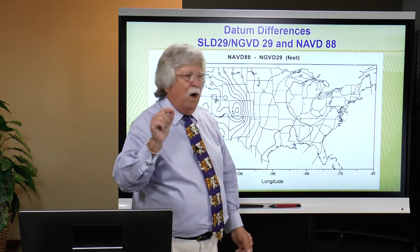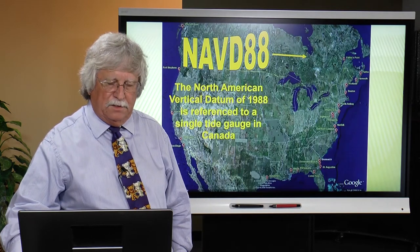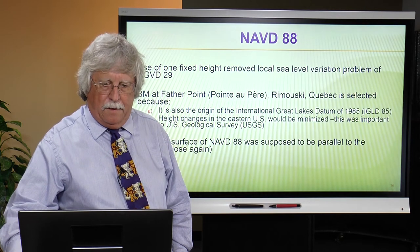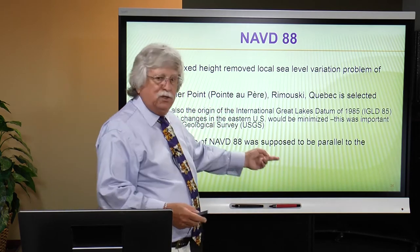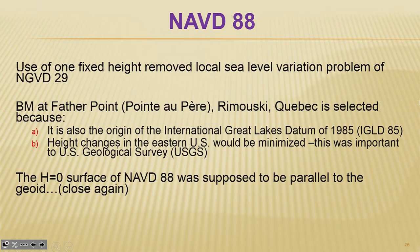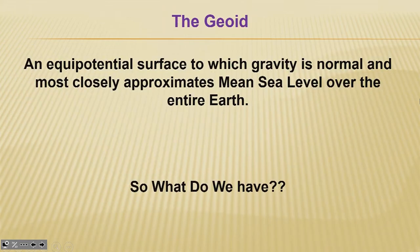NAVD88 was based entirely on the use of leveling data — there was no GPS in NAVD88 like there was later in the horizontal datum. But now increasingly the use is — well, I want to use GPS. So that comes into play: I have to have a geoid model, and how good is it? The geoid is an equal potential surface to which gravity is normal and which closely approximates mean sea level on a global basis across the whole Earth. But that's not what we have.